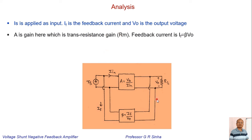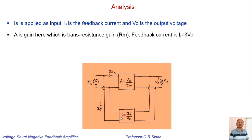The gain A here is the trans-resistance gain. This is not a voltage amplifier — it is an amplifier whose output is voltage and whose input is current. So the ratio of voltage to current is trans-resistance, meaning A represents RM, the trans-resistance gain. The feedback current IF is equal to beta times VO — that is, some part of the output voltage is sent back to the input as the feedback component.